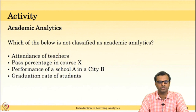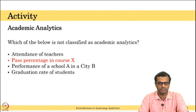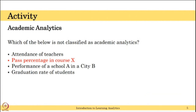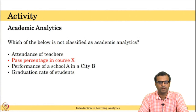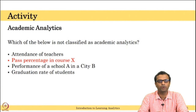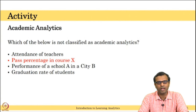The answer to this question is pass percentage in course X. All other options are related to academic analytics — such as attendance of teachers at a university, performance of school A in city B at the district level, or graduation rate of students in a college. But the pass percentage in a course is related to a particular course, which a particular teacher wants to know about. So this is not academic analytics compared to the other three options.